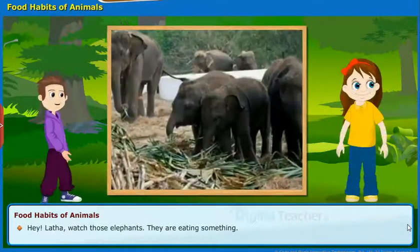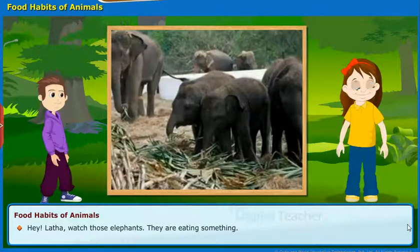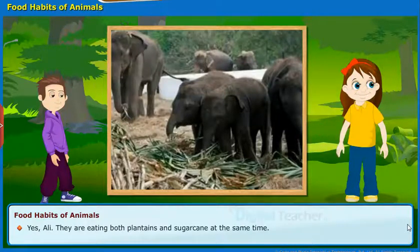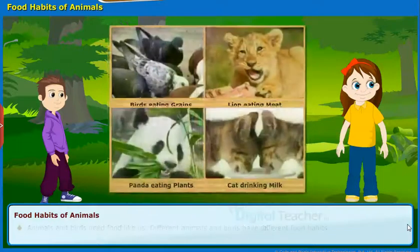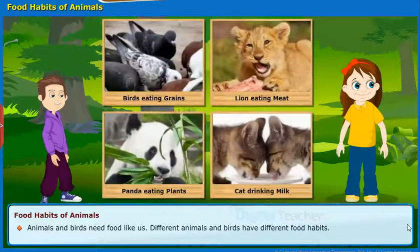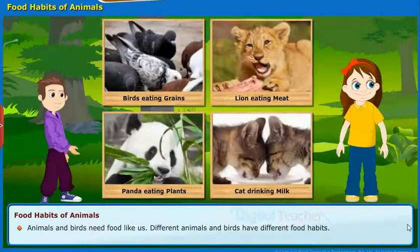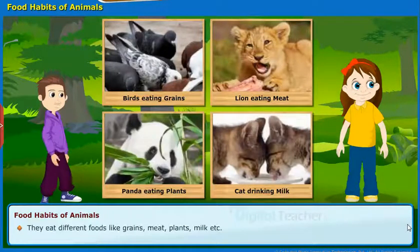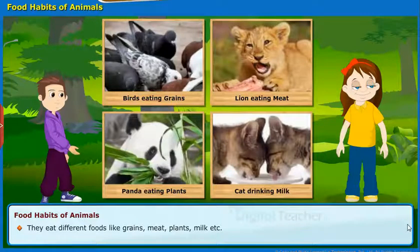Lata was asked to watch the elephants eating something. Ali and the others observed that they were eating both plantains and sugarcane at the same time. Animals and birds need food like us. Different animals and birds have different food habits. They eat different food like grains, meat, plants, milk, etc.